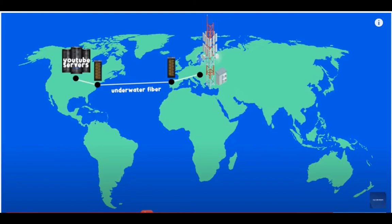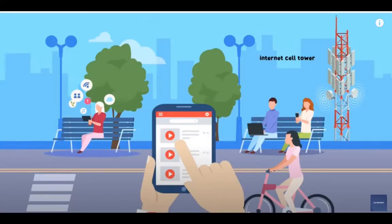Another way to look at this: when you are browsing on your phone and request a website — say youtube.com — the information is being sent from YouTube's server to you through the fiber optic cable, all the way from America to the ISP provider in your country. The ISP provider then distributes that network through the towers around your area, and you receive the information on your cell phone. That's why there are masts in different areas — so they can cover the people in that area and they can receive internet services and make phone calls.